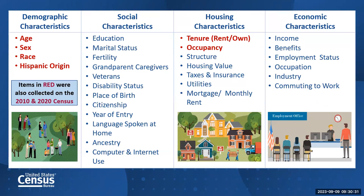Here's a list of the content collected by the ACS, which can be grouped into four main types of characteristics: social, demographic, economic, and housing. Social characteristics include topics like education, marital status, fertility, veterans, disability status, and place of birth. The ACS also collects the basic demographic characteristics from the decennial census — age, sex, race, Hispanic origin, and tenure. Economic characteristics include employment status, income, commuting to work, occupation, industry, and health insurance. Housing characteristics include tenure, occupancy, and the structure itself, including home value, housing costs such as mortgages, taxes and insurance, utilities, plumbing, and kitchen facilities.